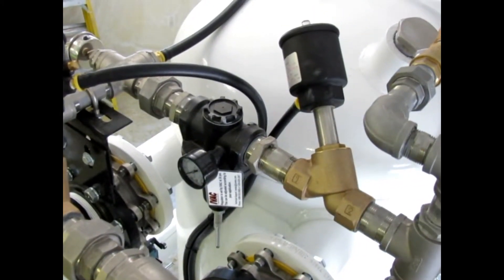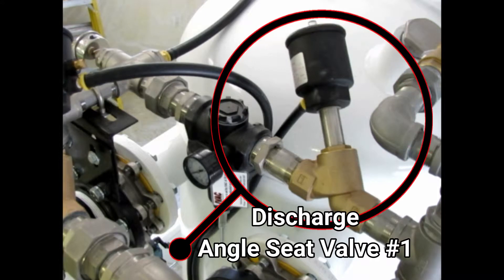The discharge air angle seat valve allows air to energize the discharge airline to evacuate the tank of your picked up materials.